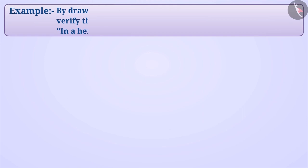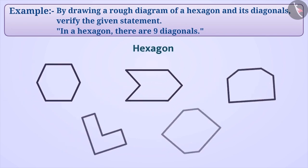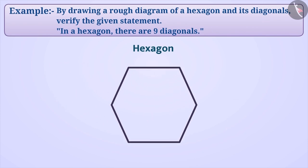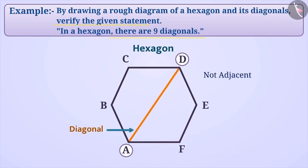Next example: by drawing a rough diagram of a hexagon and its diagonals, verify the given statement. In a hexagon, there are 9 diagonals. First of all, we will draw a hexagon. You can draw it in different ways. Let's take this hexagon. We will name its vertices as ABCDEF. The diagonal of a polygon is a line segment that connects the vertices which are not adjacent. To verify the given statement, we will have to draw all the diagonals of the hexagon. Let's learn an easy method for this.